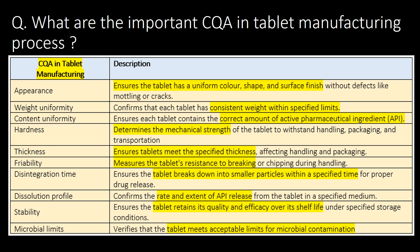What are the important CQAs in the tablet manufacturing process? The important CQAs in tablet manufacturing are: appearance, weight uniformity, content uniformity, hardness, thickness, friability, disintegration time, dissolution profile, stability, and microbial limits.